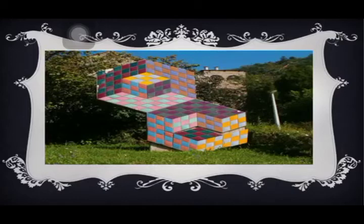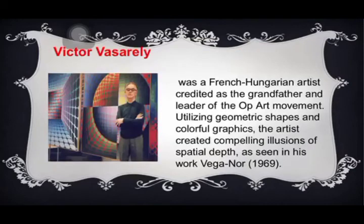The next artwork is called Sine Sculpture, made in 1977 by Victor Vasarely. Wanting his paintings and sculptures to look like they were moving, see what happens while you stand at the shapes. Victor Vasarely was a French-Hungarian artist, regarded as the grandfather and leader of the Op Art movement.